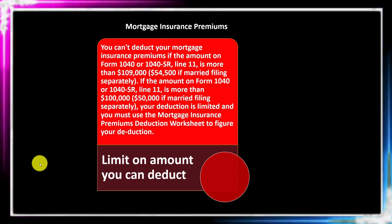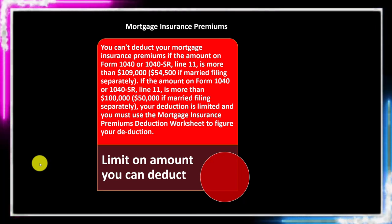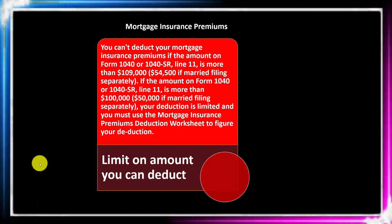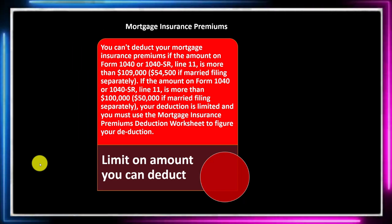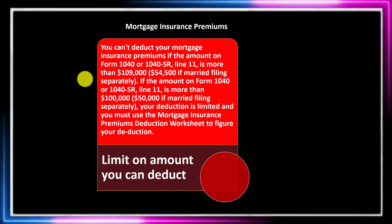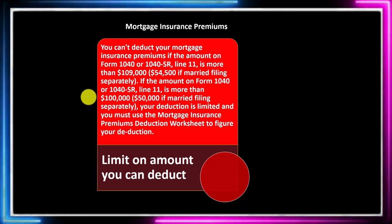Limit on the amount you can deduct: you can't deduct your mortgage insurance premiums if the amount on Form 1040 or 1040-SR line 11 — the adjusted gross income — is more than $109,000, or $54,500 if married filing separately. Remember, income-related phase-outs use the adjusted gross income from line 11, not just the gross income line. If AGI is more than $100,000 — or $50,000 if married filing separately — your deduction is limited and you must use the mortgage insurance premiums deduction worksheet.